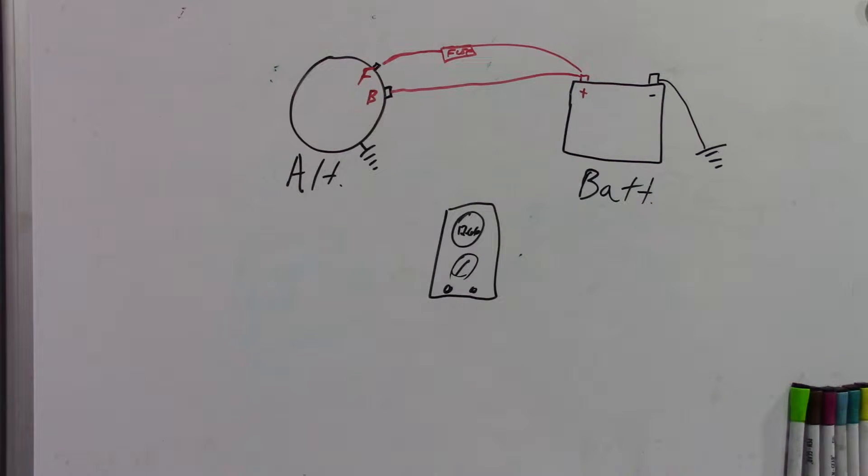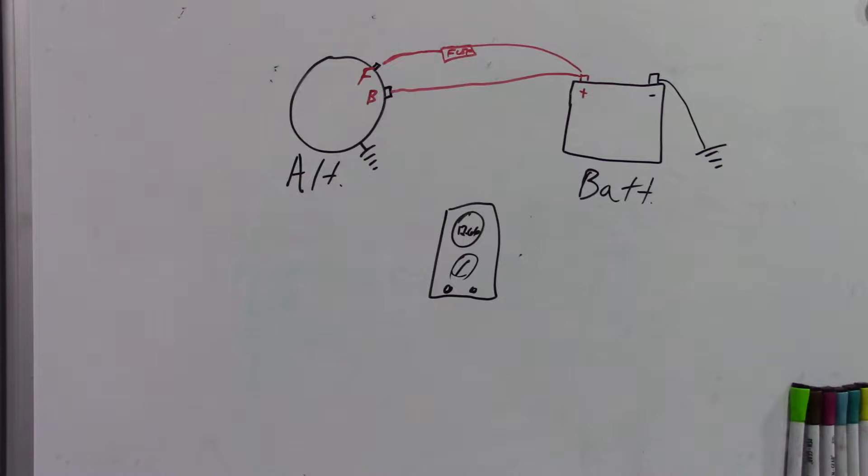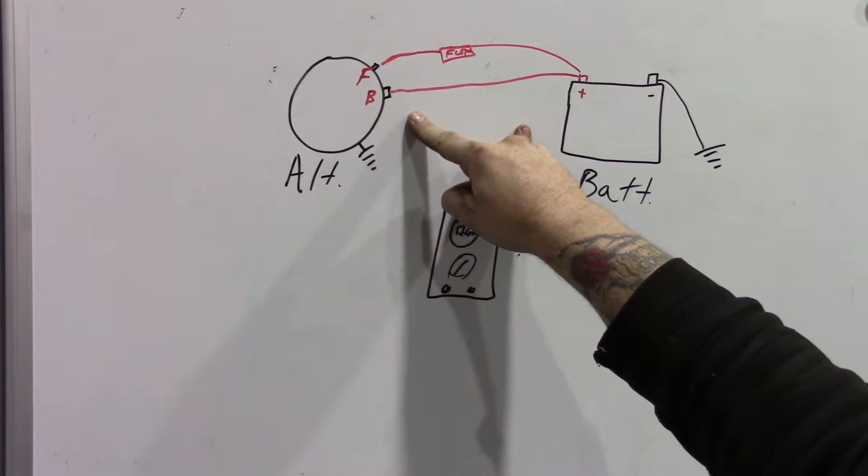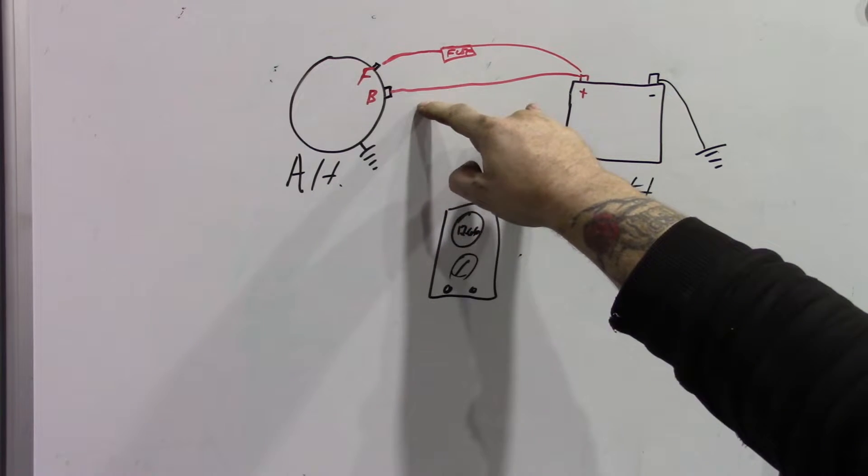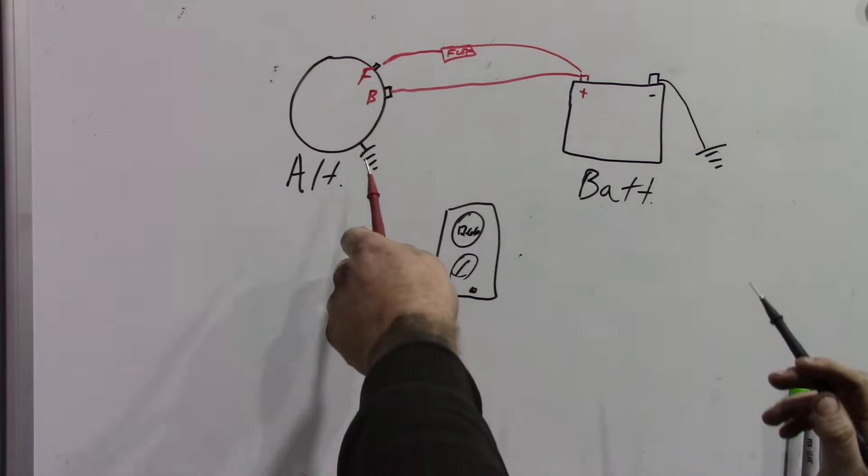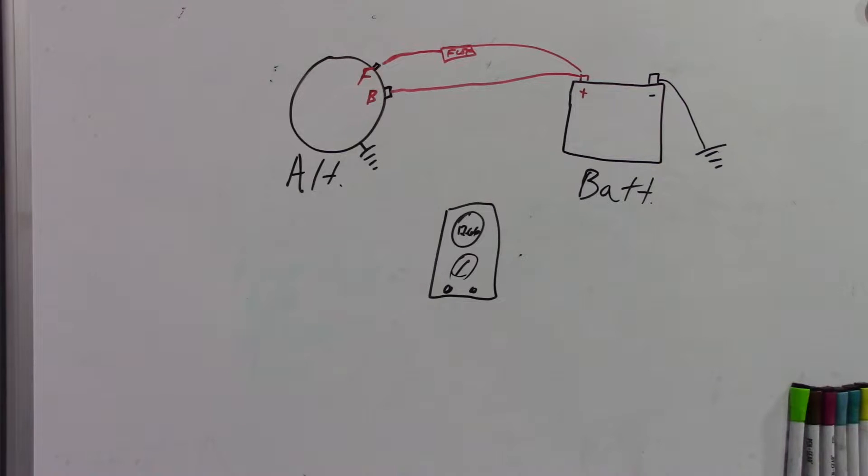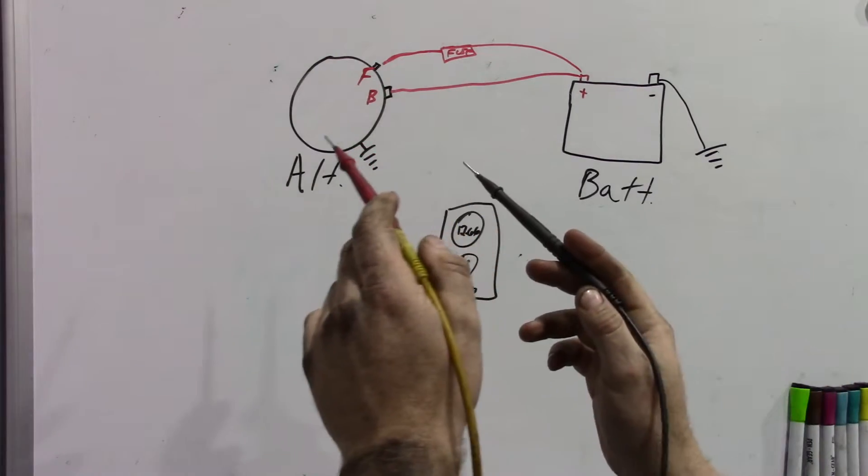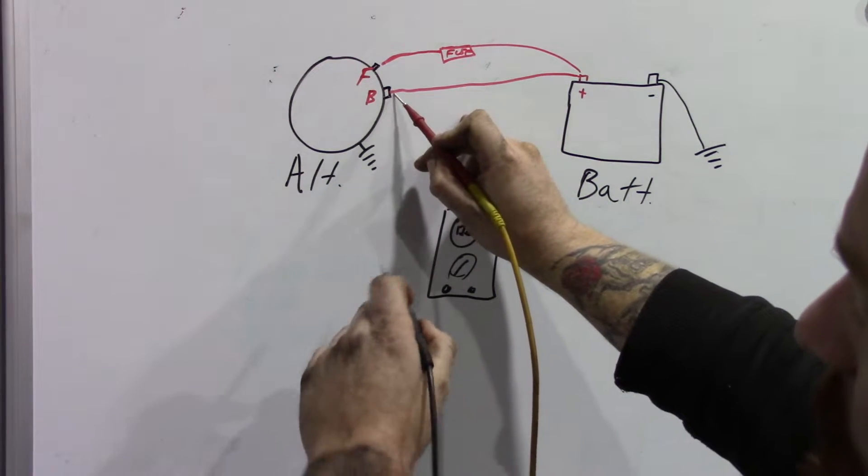One way you can do voltage drop: the normal way is you check positive to positive, just like this. What you should see is nothing. A voltmeter reads difference in voltage. Positive to positive—there should be no difference. You should get close to zero, maybe a tenth of a volt. Then you'd do the same on the ground side—ground case of the alternator to the ground on the battery. You should see nothing. What I'm going to do: we checked the battery at 12.5 volts. We're going to go to the alternator...